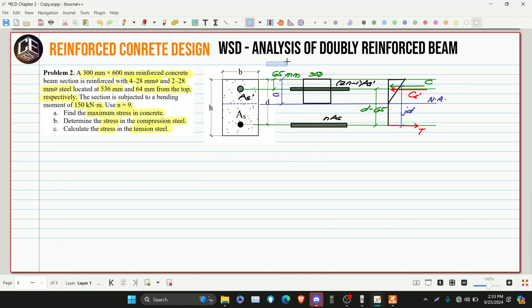Let's just write the given. So this is 64. Then this is 300 still. This is D minus 64. This is JD. Cs prime C. The main difference is the given D. So this is 536 millimeters.